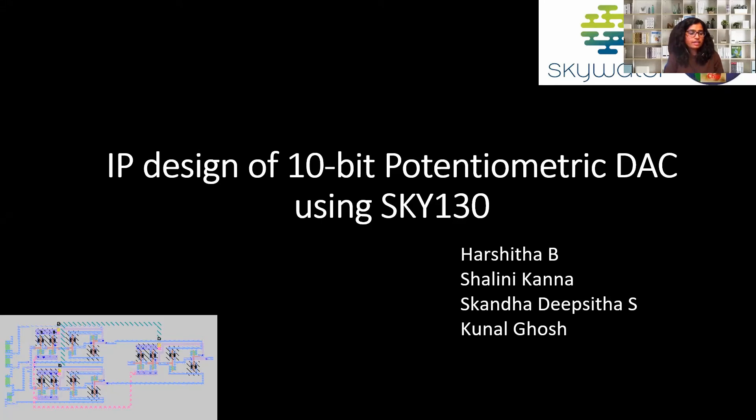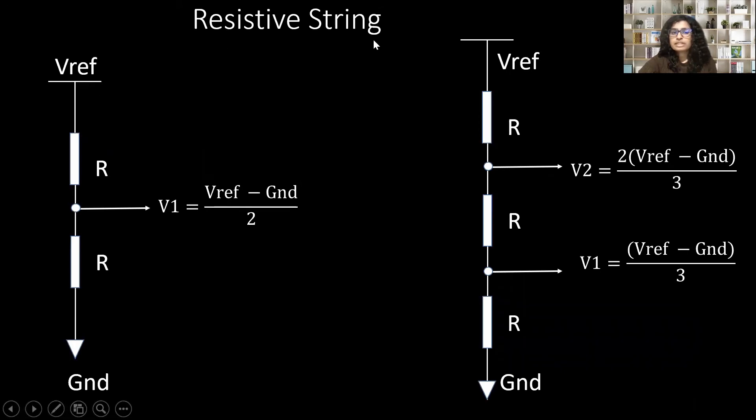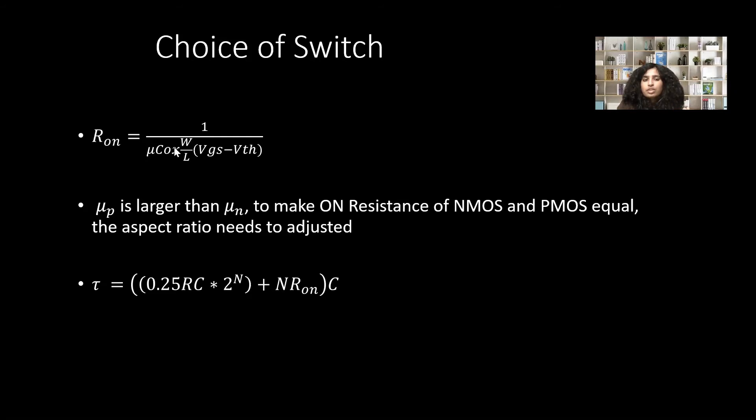Hello everyone, I welcome you all for the webinar of IP design of 10-bit potentiometric DAC using Sky 130 open source PDK. Firstly, resistive string. What is the need of resistive string in a DAC can be explained by a small example here. Make sure we adjust the W-by-L ratio accordingly so that our on resistance is equal for both of them. So let's see how to calculate this on resistance.